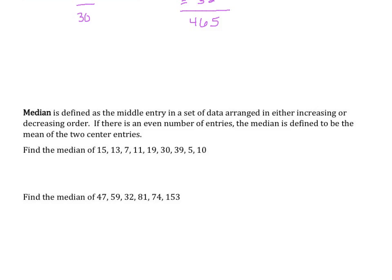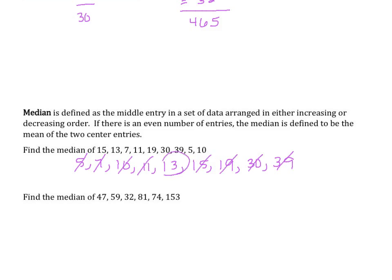Find the median of the set of data: 15, 13, 7, 11, 19, 30, 39, 5, and 10. First, arrange them in numerical order: 5, 7, 10, 11, 13, 15, 19, 30, 39. Then tick off one from the front and one from the back until we reach the middle. It looks like 13 is the center of our data.